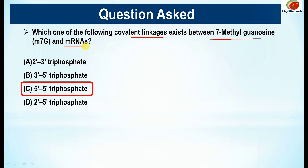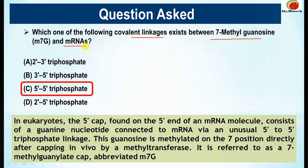Here comes the explanation: In eukaryotes, the 5' cap is found on the 5' end of an mRNA molecule. It consists of a guanine nucleotide connected to the mRNA via an unusual 5' to 5' triphosphate linkage. This is unusual because it is the only case where such a 5' to 5' triphosphate linkage occurs.